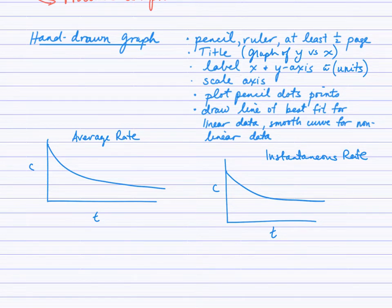You'll be drawing a graph in class and analyzing that graph. When you go to analyze the graph, you'll be asked for average and instantaneous rate. An average rate is referring to the rate over a period of time, from T1 to T2.